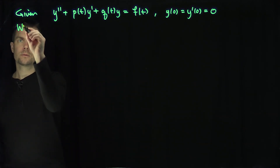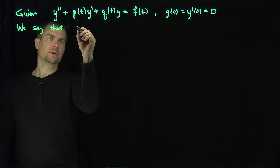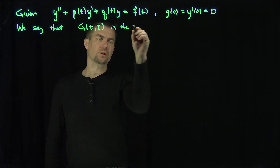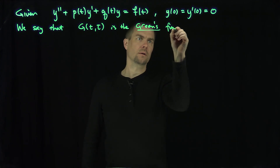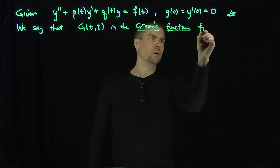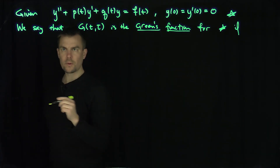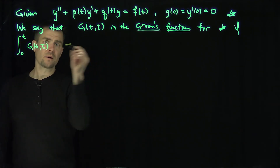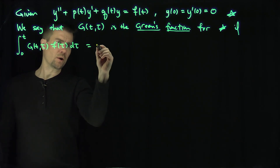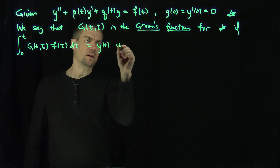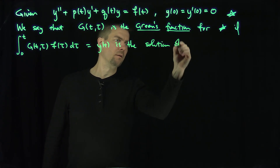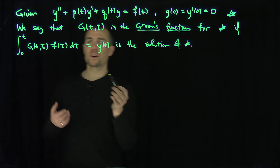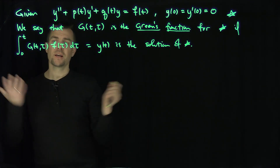We say that g(t, τ) is the Green's function for star, if we integrate from 0 to t of g(t, τ) · f(τ) dτ equals some function y(t), where y(t) is the solution of star. This Green's function is basically like a solution operator. If I want to solve this equation, I can just plug in this Green's function against the forcing term and get the solution.